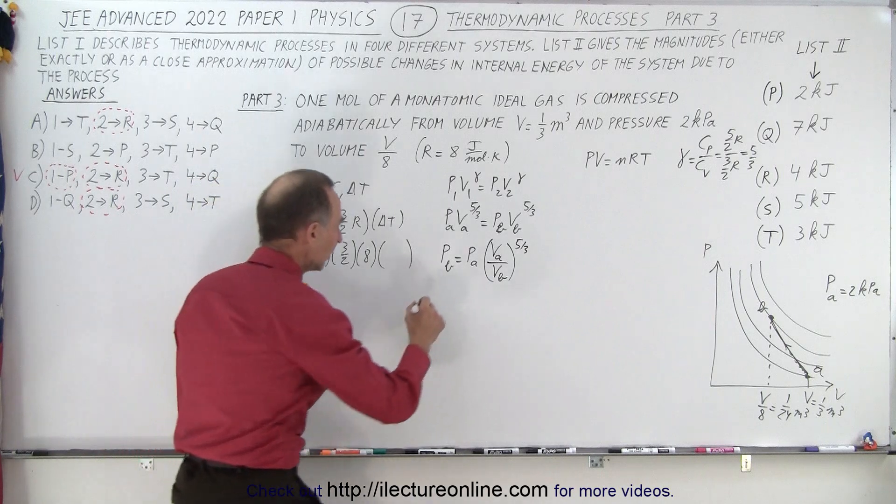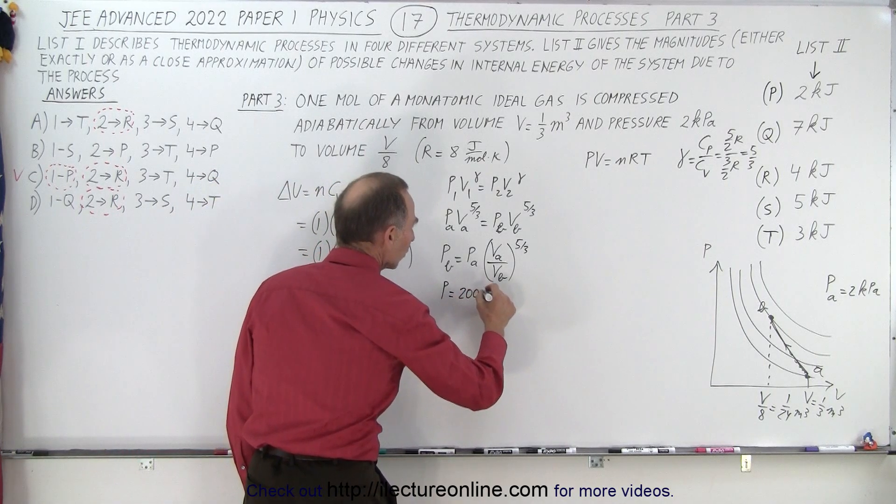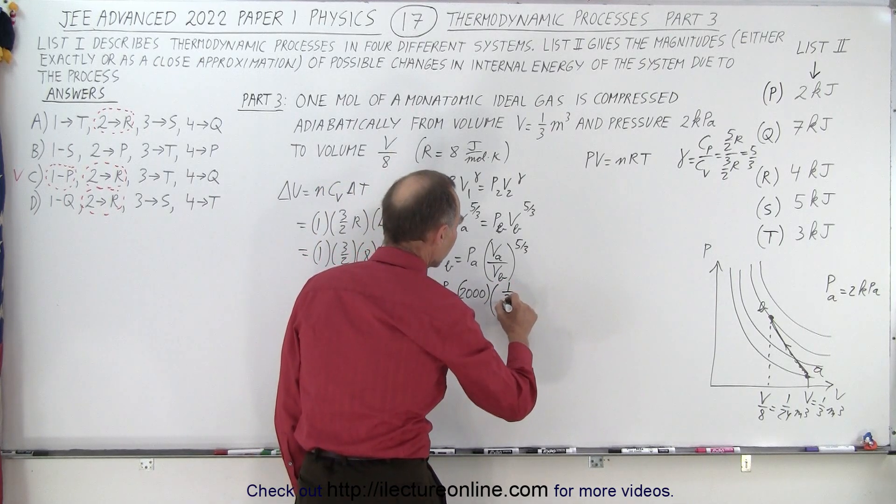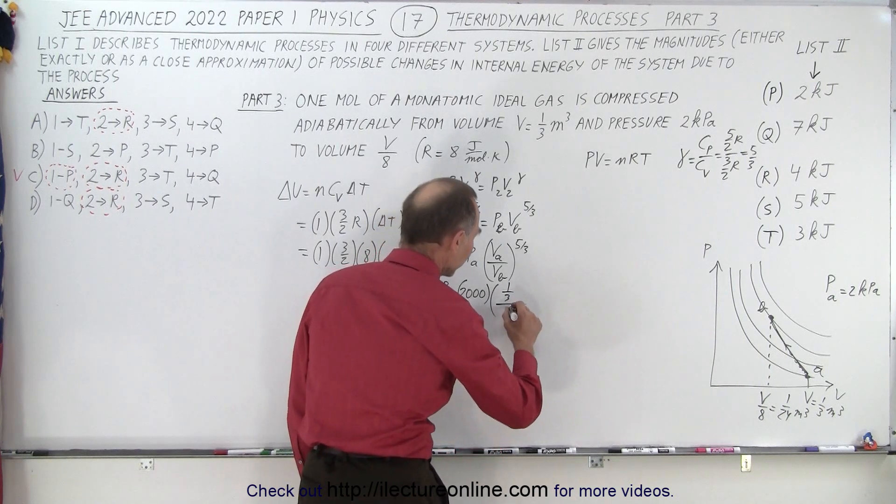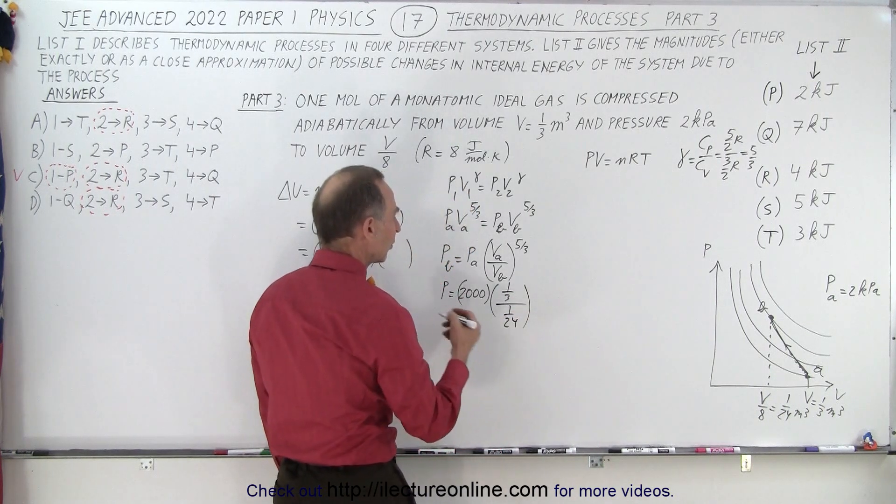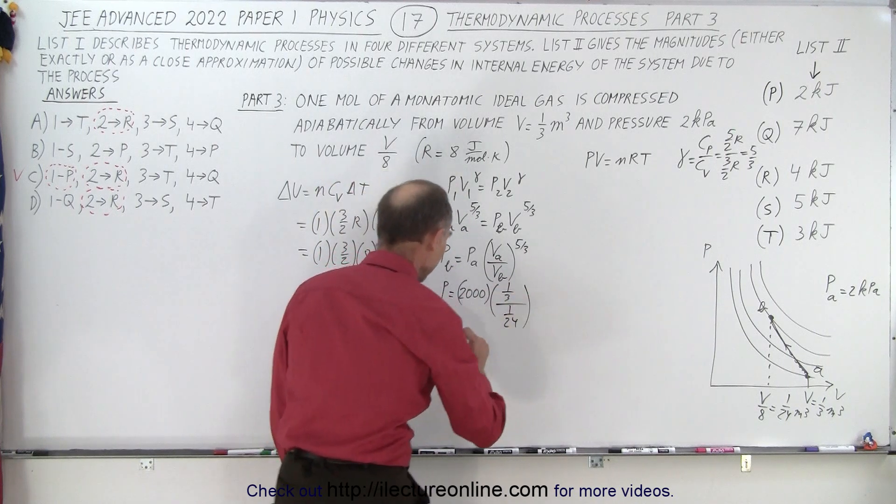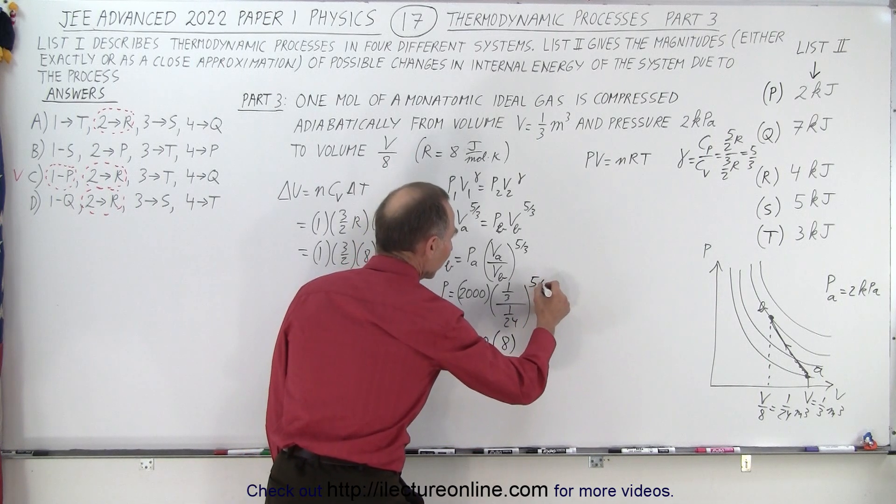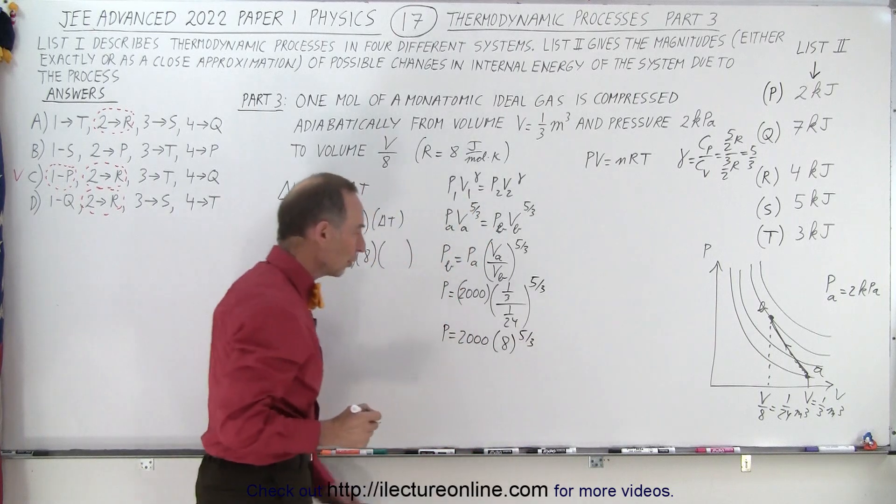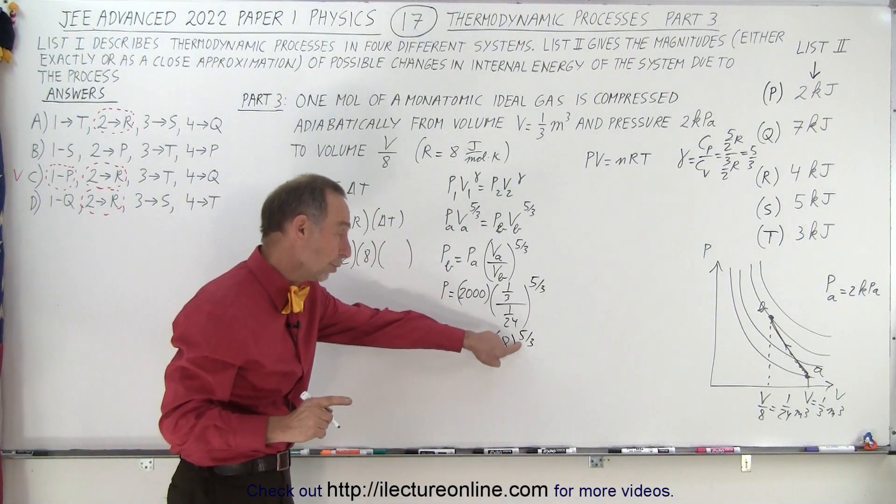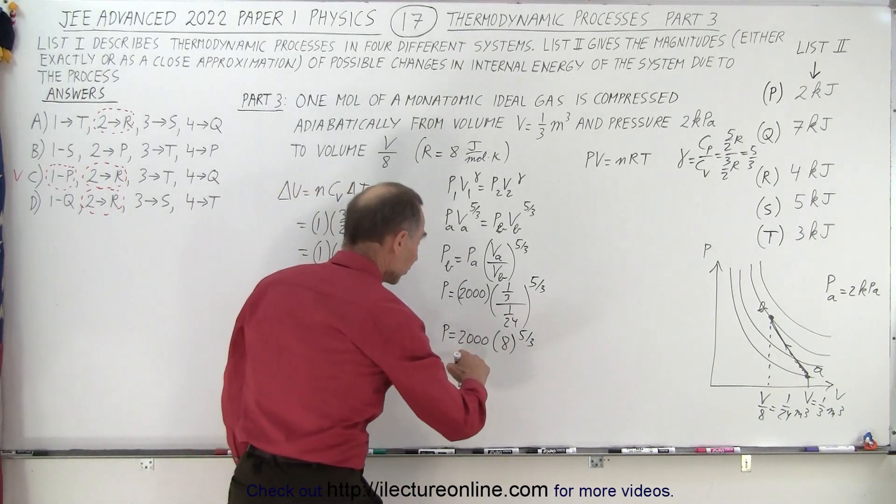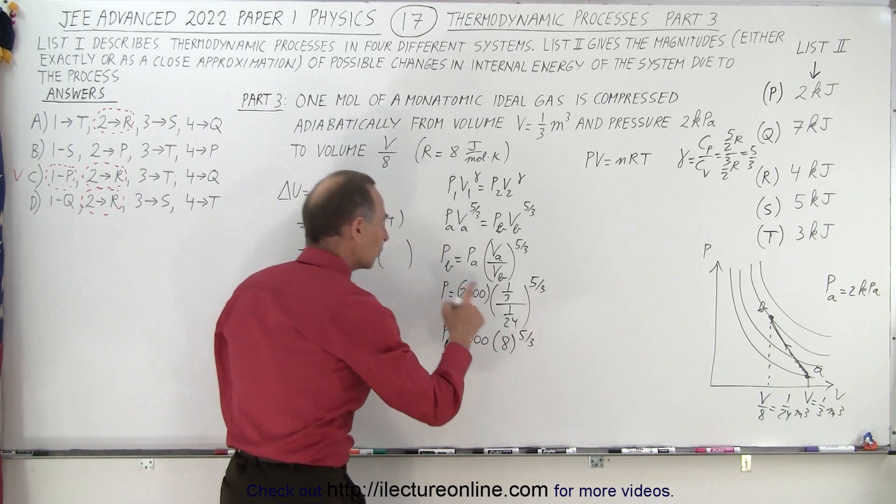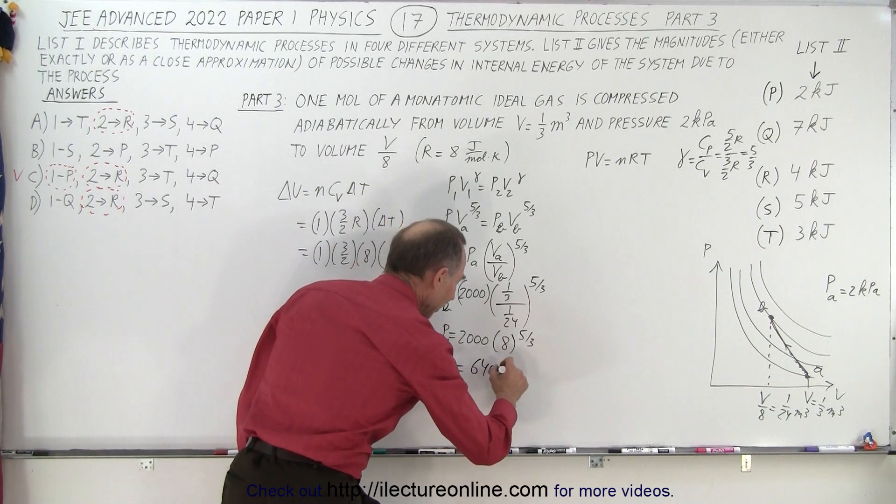Pb equals 2,000 pascals times Va, which is 1/3, divided by Vb, which is 1/24. That would be 24 over 3 or 8. So this is 2,000 times 8 to the 5/3 power. We can take the cube root of 8, that's 2, to the 5th power is 32. So pressure at B is 2,000 times 32, which is 64,000 pascals.